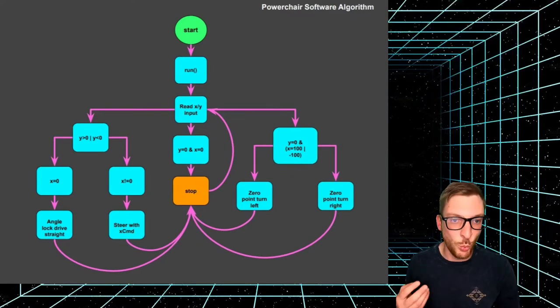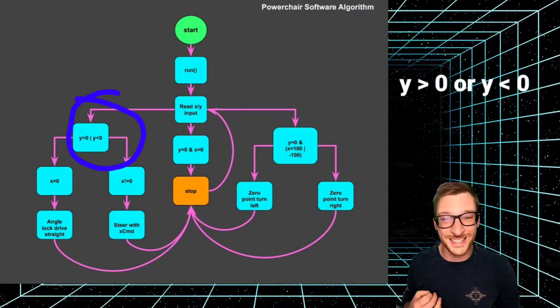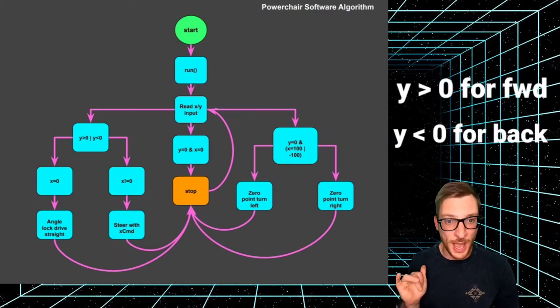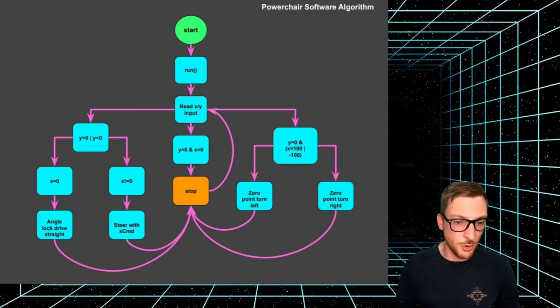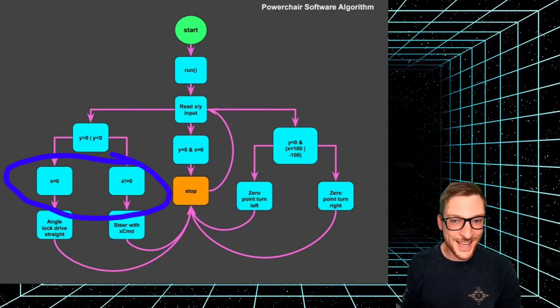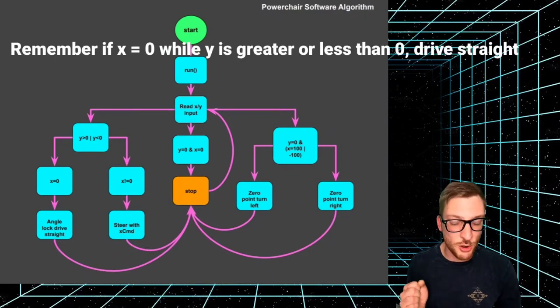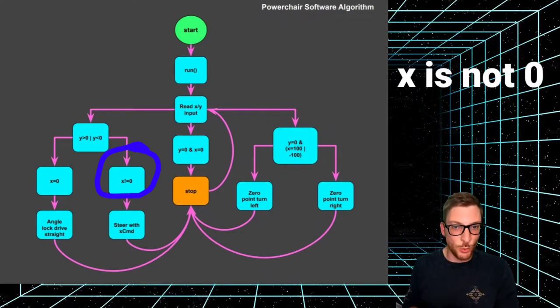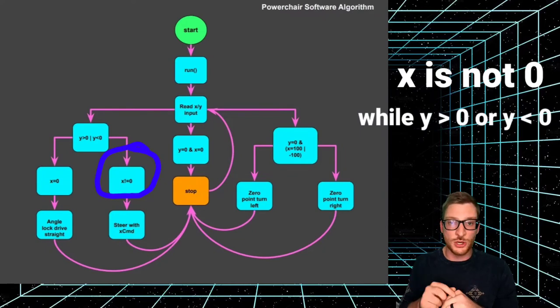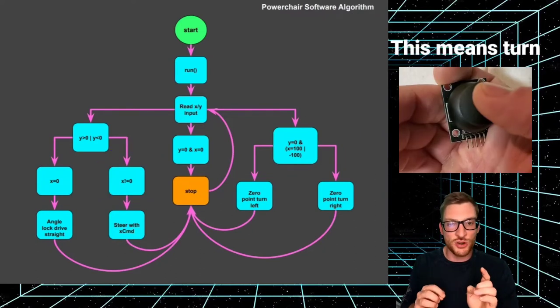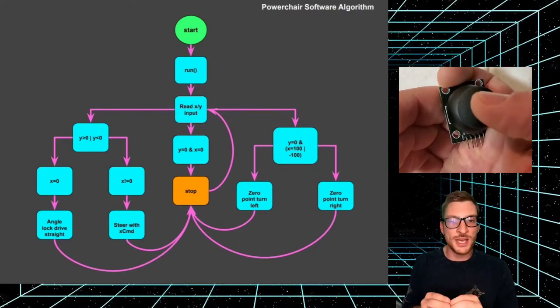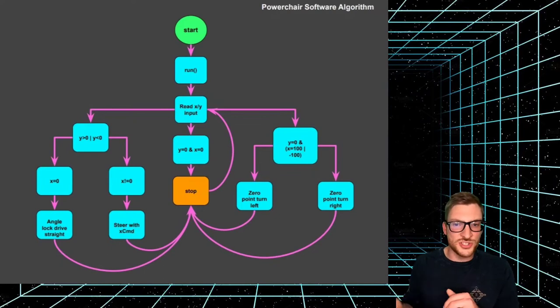Okay, so let's keep looking at this logic tree. If Y is greater than zero or Y is less than zero, then you're commanding the power chair forward or backward. Then it's going to look at this next part of the tree, which is the X command value. If the X-axis is zero when you're commanding the chair forward or backward, then it is assumed that you want to drive straight. Now if the X input is not zero while we're commanding Y greater than zero or Y less than zero, then we're commanding the chair to turn and it will adjust the turn to the right or the left depending on the X command input.